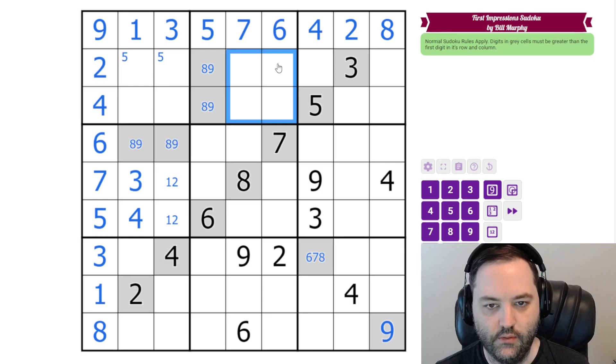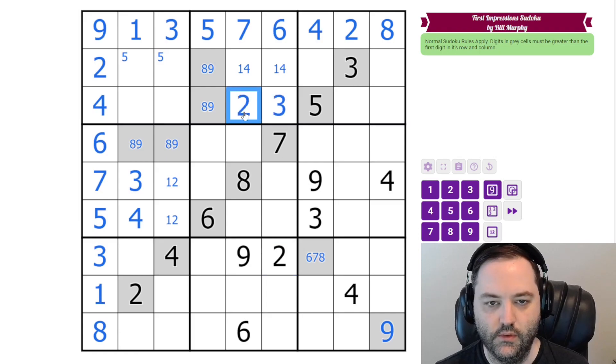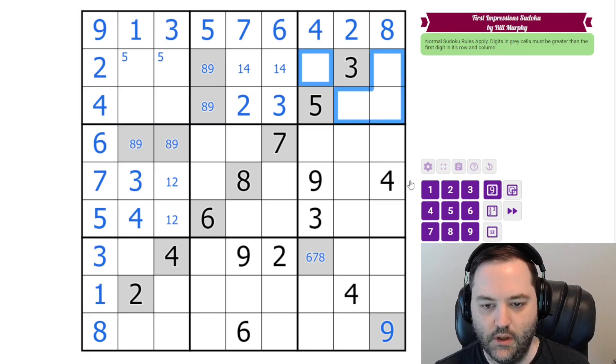In this box, we also need 1, 2, 3, 4. Here we have 2 and 3 in the row. So these are 1 and 4. We have a given 2. Alright, this box, we need 1, 6, 7, and 9.